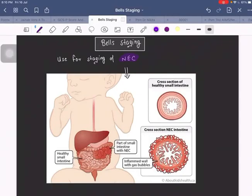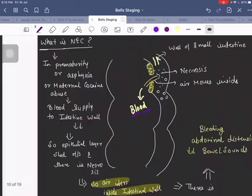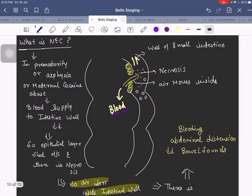I'm going to discuss Bell Staging, which is used for staging necrotizing enterocolitis. So what is NEC? In prematurity, asphyxia, or maternal cocaine abuse, blood supply to the wall of the small intestine decreases. The epithelial layer is shut off and there is necrosis. Air enters inside the wall of the small intestine, and there is bleeding, abdominal distension, and decreased bowel sounds.